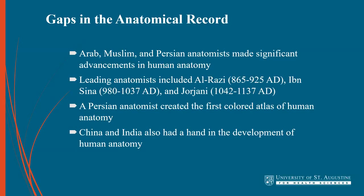Historians have started paying closer attention to the significant contributions to anatomy made by Arabic, Muslim, and Persian scholars. While ancient Greek anatomists like Galen had only dissected animal bodies, human cadaver dissection was commonplace in Persia as far back as the 10th millennium BC. The Islamic golden age between the 8th century AD and 14th century AD introduced major advances in anatomy, advancing and even correcting popular Galenic theory. It was a Persian anatomist who created the world's first colored human anatomy atlas in the 14th century AD.